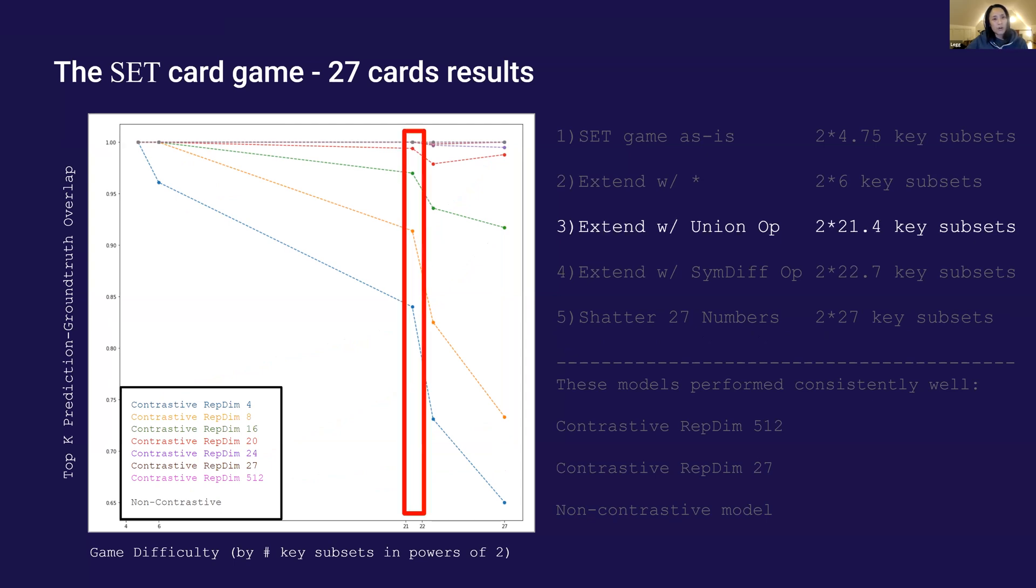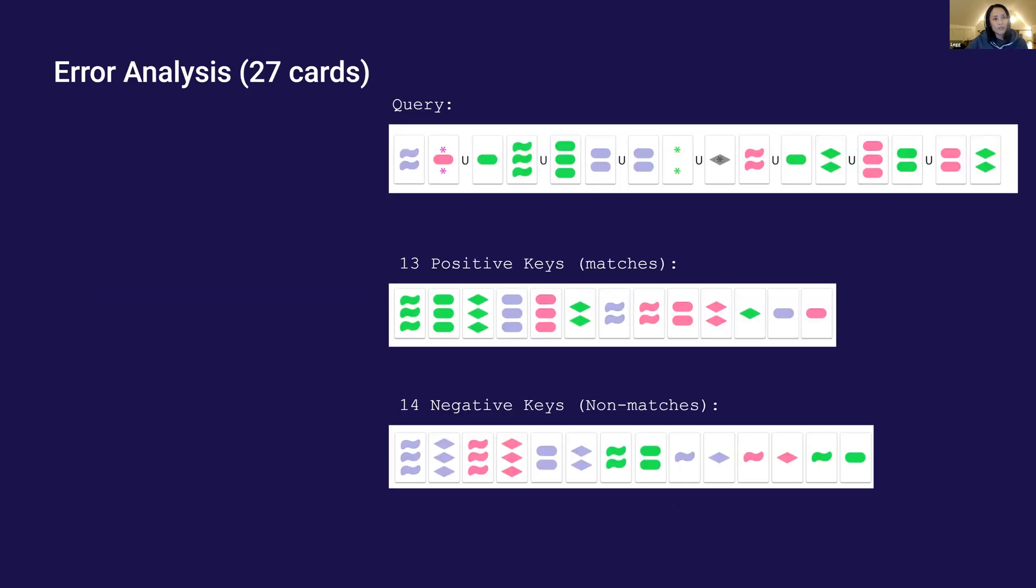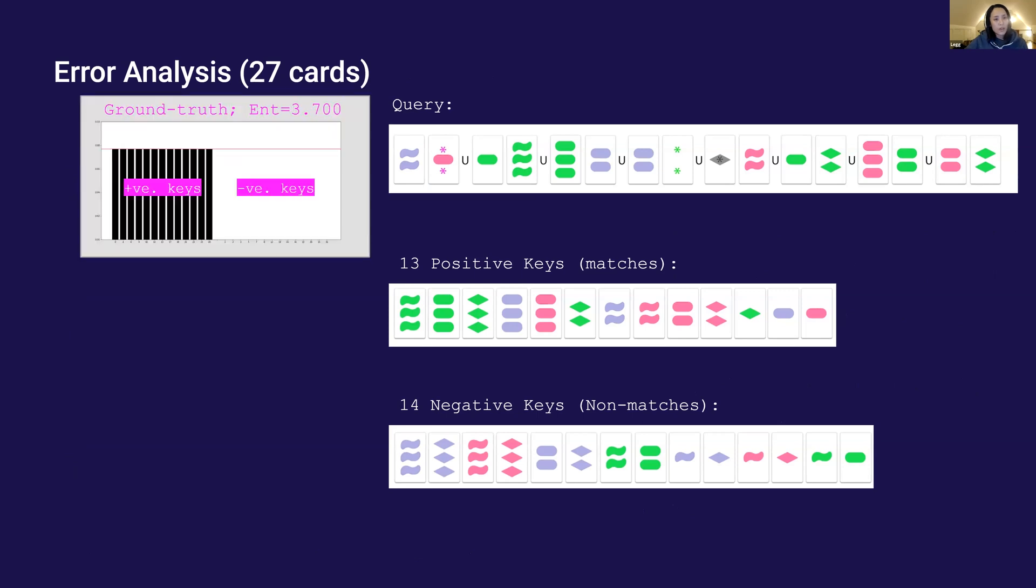To understand why the models with shorter vector representations are worse, I zoomed into one game for some analysis. This is a representative query from erroneous predictions. It matches with 13 ground truth positive keys and 14 ground truth negative keys. The perfect model normalizes the dot products and distributes the probability mass evenly among the positive keys and nothing among the negative keys.